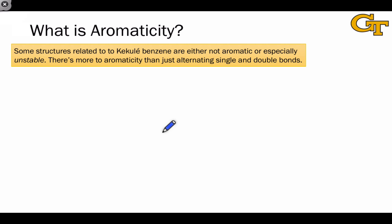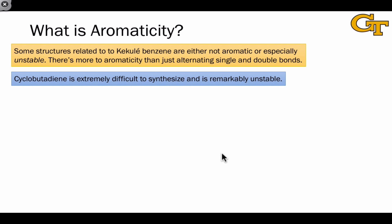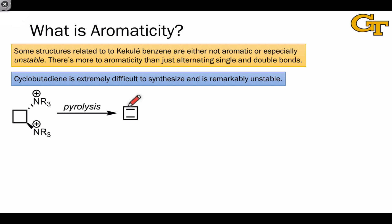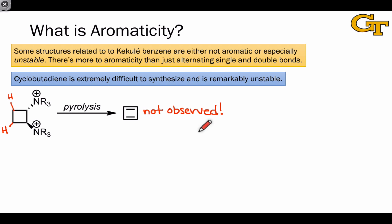In the early days, the concept of aromaticity was essentially invented to apply to compounds that give substitution products rather than addition products when treated with electrophiles, even though they were heavily unsaturated. But there's more to aromaticity than just alternating single and double bonds. Take, for example, the related molecule cyclobutadiene, which looks a lot like benzene but contains four carbons instead of six. Despite appearing to be conjugated, cyclobutadiene is remarkably unstable — it is not observed under pyrolysis conditions and is extremely difficult to synthesize even from a cyclobutyl dihalide. There's more to aromaticity than just alternating double and single bonds.